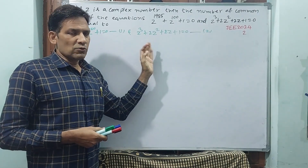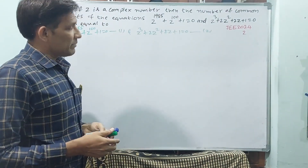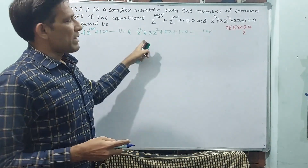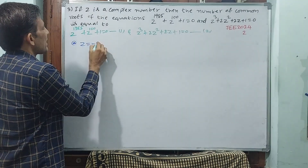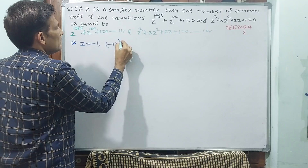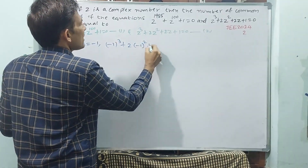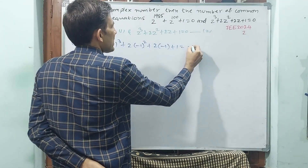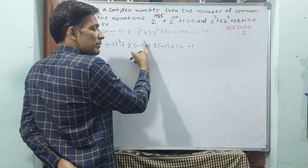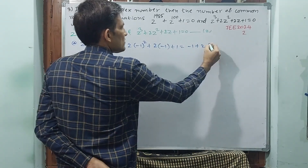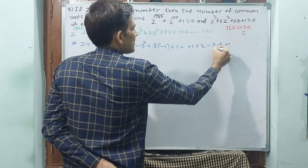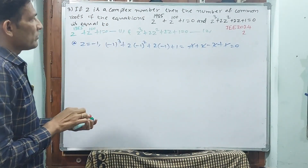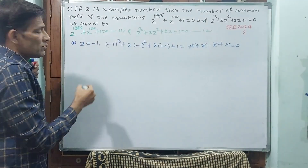With trial and error, we try Z = 1, -1, 2, -2, 3, -3. Let's try Z = -1. At Z = -1: (-1)-cube plus 2(-1)-square plus 2(-1) plus 1 equals -1 plus 2 minus 2 plus 1, which equals 0. LHS equals RHS. So Z = -1 is one root.